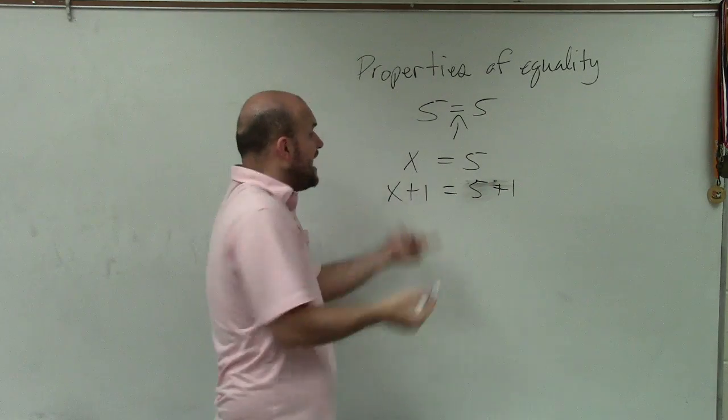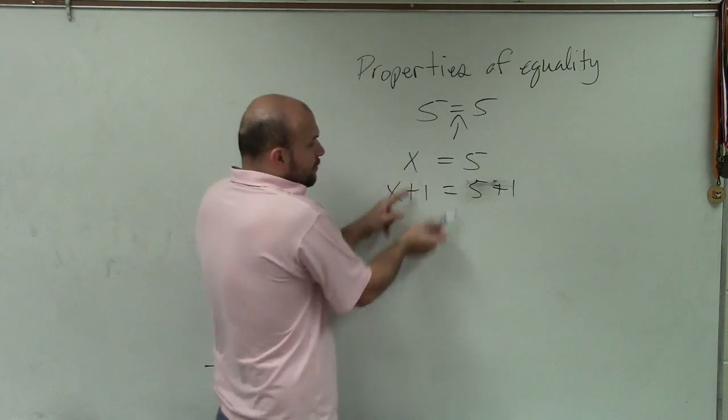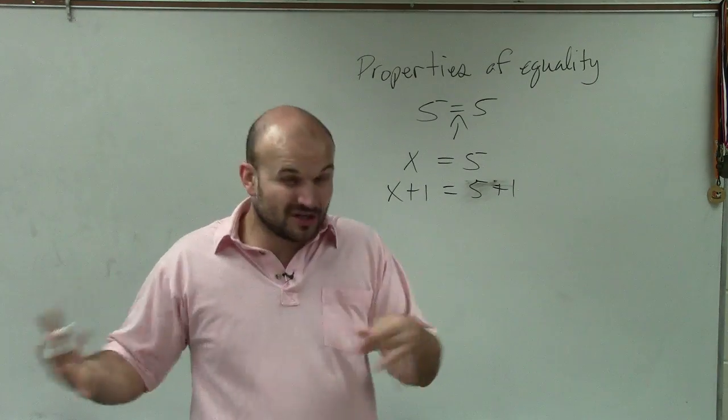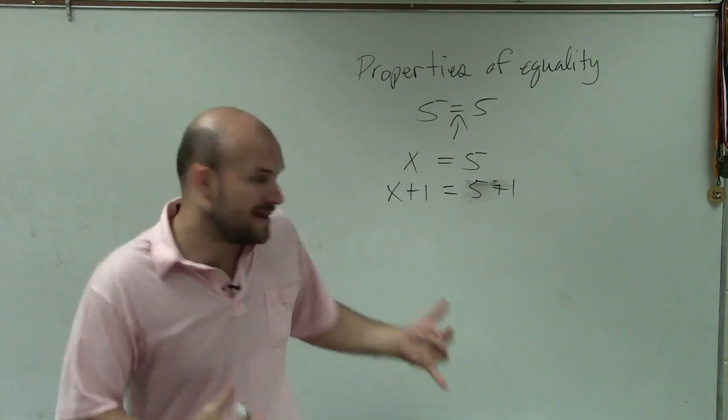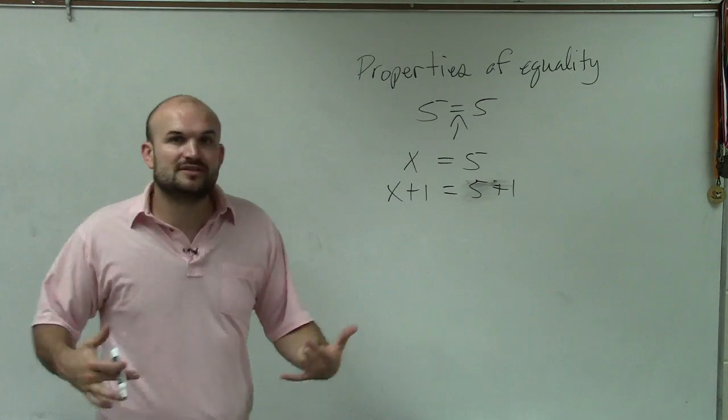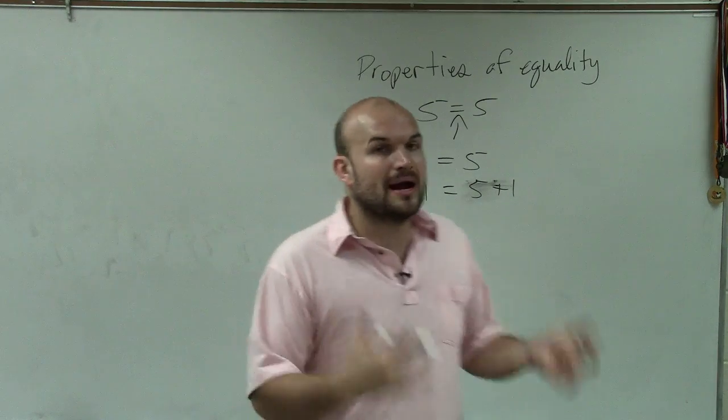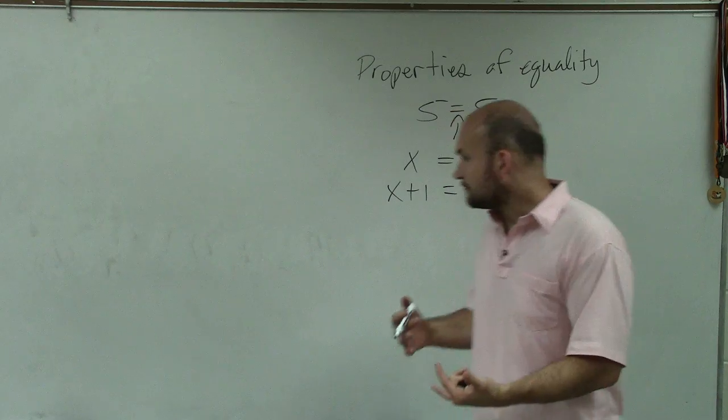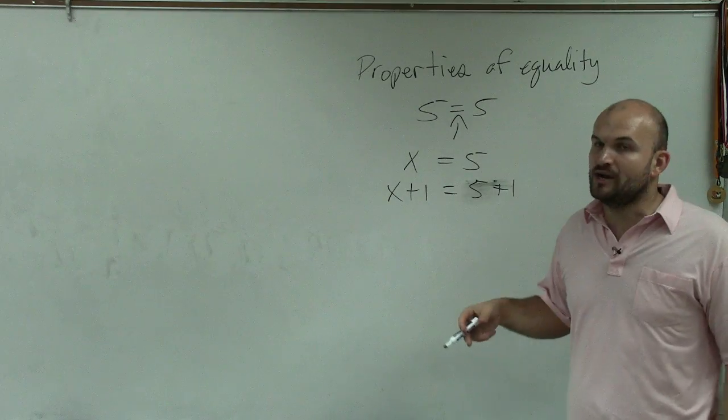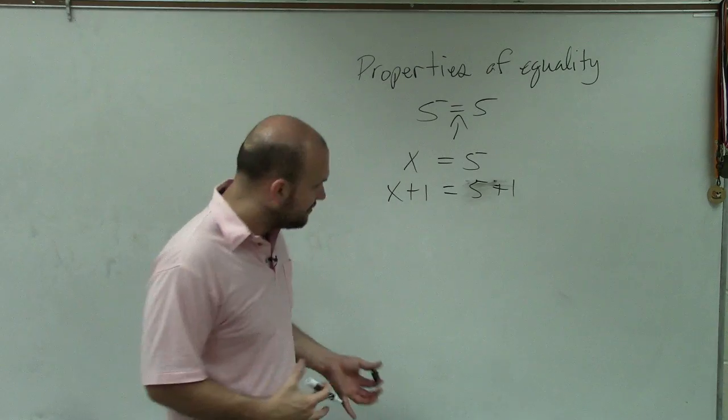The value of x is still 5, right? These equations are equivalent. The value of x is still 5. They look different, right? They're in different formats, but the value is still the same. So we use the properties of equality to produce equivalent equations so that we can solve for our variable.